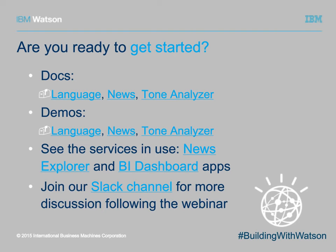If you want to see the services in use, we have a couple of applications that show off what can be done. We have a News Explorer app that takes Alchemy Data News and helps you better understand the news around your company or a person — it extracts meaningful information about related entities and keywords and allows you to look at trending behavior and connections between entities. We also have our BI dashboard, which is built out as an application starter kit, so the code is available for anyone to use. In our next session, we'll dig into that code and show you the technical details.